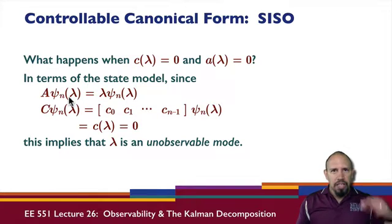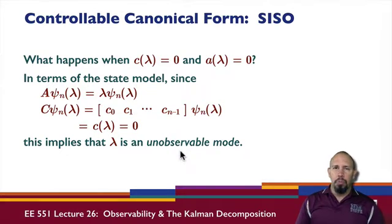So what is this saying? It's saying that C, which is not zero—it doesn't matter what lambda is, C is not zero because that first element is one—so A times this vector is equal to lambda times this vector, and C times this vector is equal to zero. This implies that you have an unobservable mode.